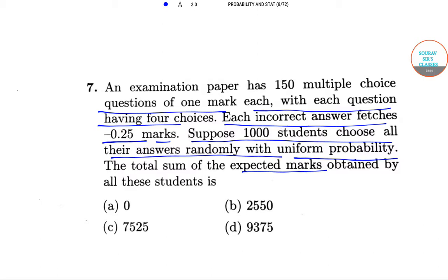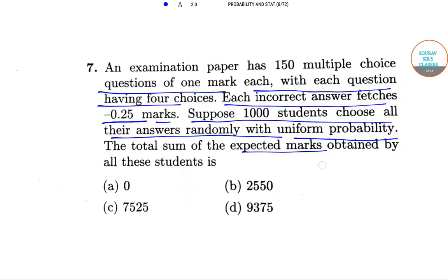The options are: 0, 2550, 75, and 259,375. The examination paper has 150 multiple choice questions of one mark each, with each question having four choices. Each incorrect answer carries minus 0.25 marks. Suppose 1,000 students choose all their answers randomly with uniform probability.